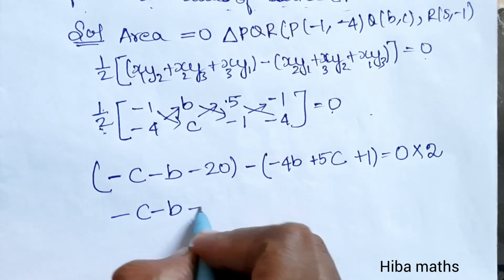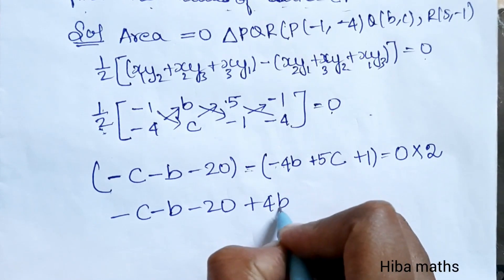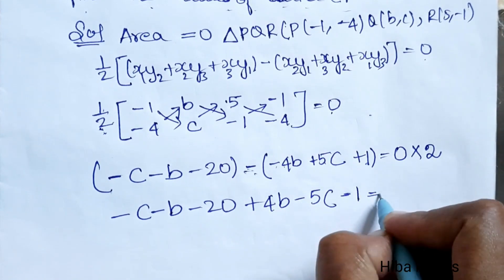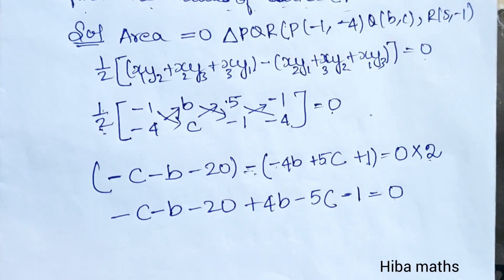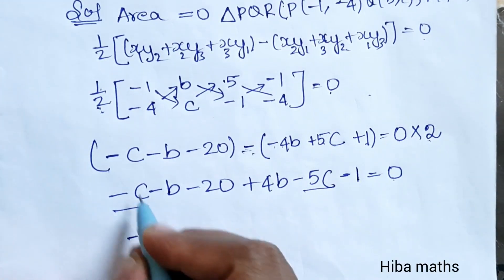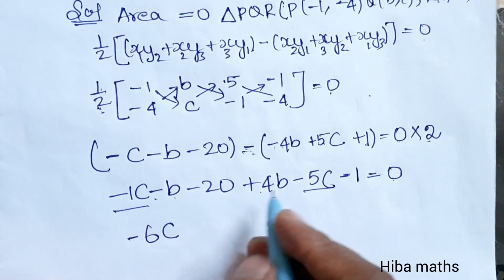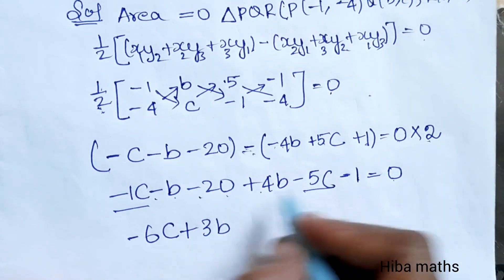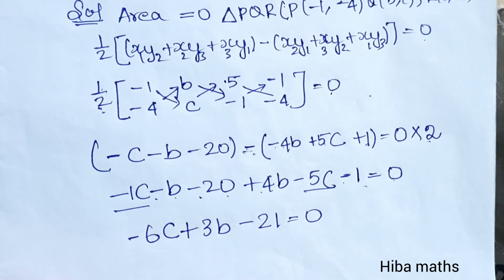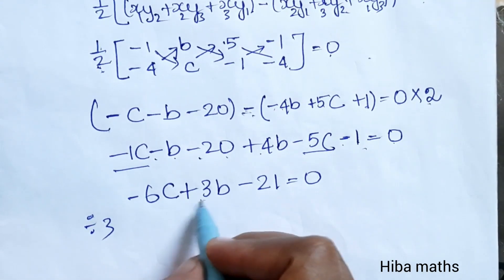Expanding: minus c minus b minus 20. Bringing the minus inside: plus 4b, minus 5c, minus 1 equals 2 into 0. Collecting like terms: minus c minus 5c is minus 6c; minus b plus 4b is plus 3b; minus 20 minus 1 is minus 21, equal to 0. Dividing everything by 3.